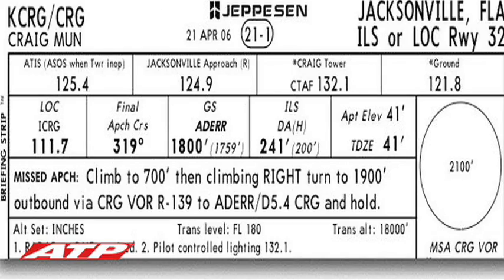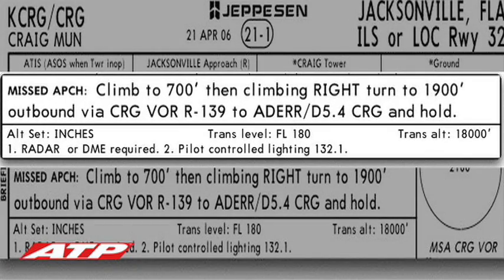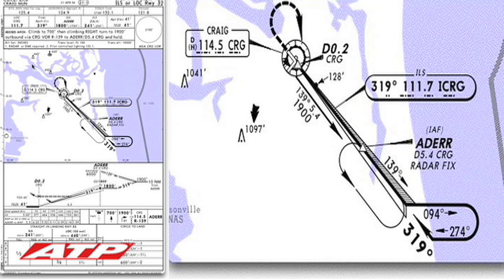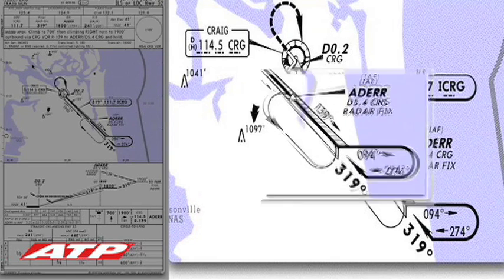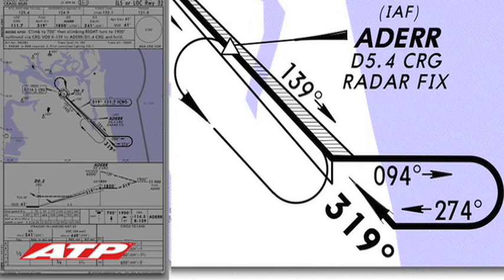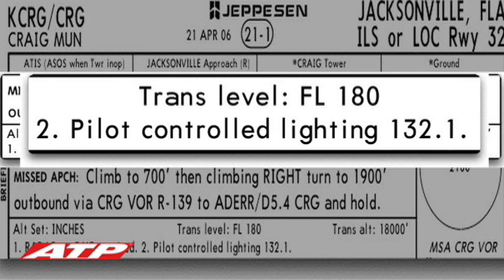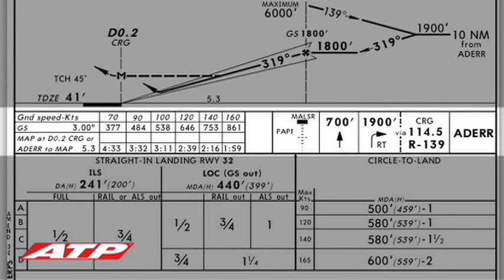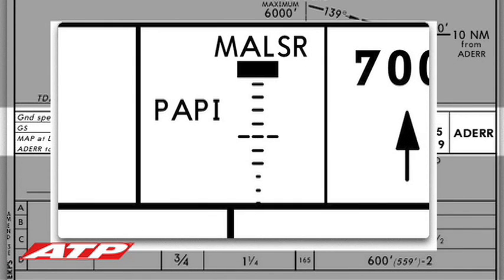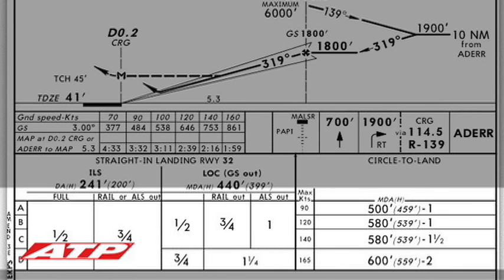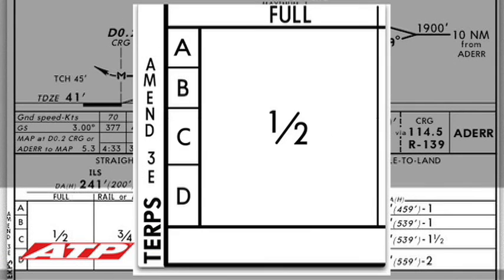The missed approach will be a climb to 700, then a climbing right turn to 1,900 outbound via the Craig VOR 139-degree radial to Adair intersection, to hold using a teardrop entry. Adair is 5.4 DME from Craig. Radar or DME is required for this approach — we have DME. Pilot-controlled lighting is available on 132.1. This runway has a medium intensity approach light system and a PAPI on the left side. A minimum of one-half mile flight visibility is required to complete the approach.